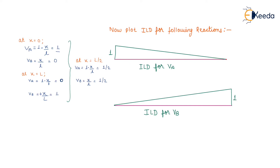For plotting the influence line diagram for support reaction at A: at x equals 0, VA equals 1; at x equals L, VA equals 0; and at x equals L/2, VA equals 1/2. All the equations vary linearly, so we draw a straight line. In the equation of VA, the slope is negative, so the graph slopes downward — and that is the influence line diagram for support reaction at A.